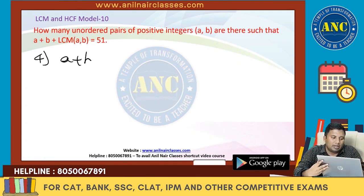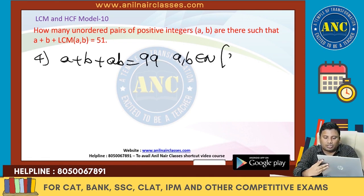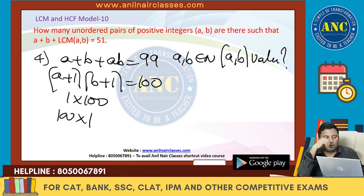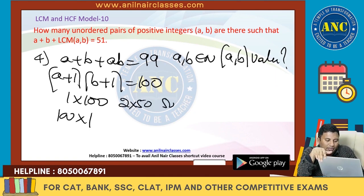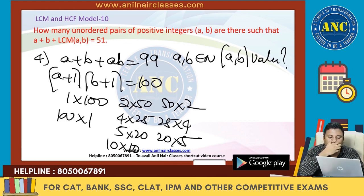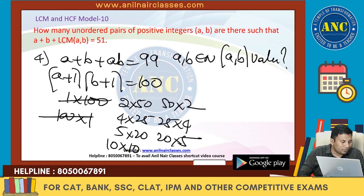Fourth example: A plus B plus AB equals 99, A and B are natural numbers. How many values will AB take? Add 1: (A plus 1) into (B plus 1) equals 100. Factor pairs: 1 into 100 — out; 100 into 1 — out; 2 into 50; 50 into 2; 4 into 25; 25 into 4; 5 into 20; 20 into 5; 10 into 10. That's 9 cases total. The pairs where one factor is 1 are eliminated, leaving 7 valid cases.